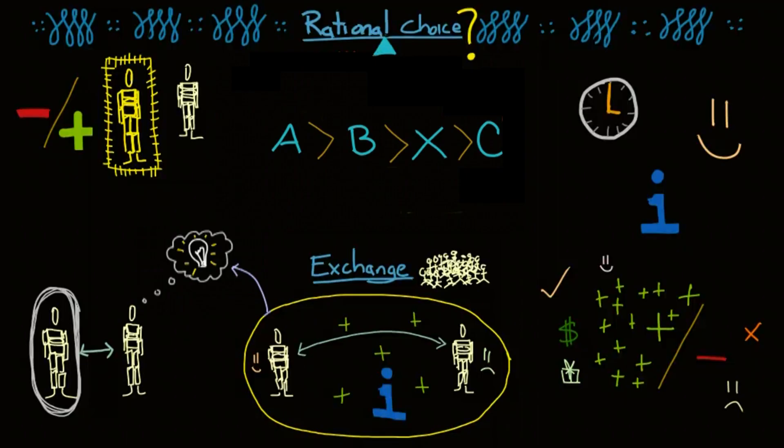The third main criticism is that, is it really possible to explain every single social structure by the actions of individuals?